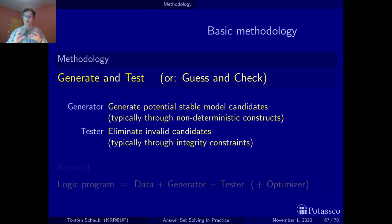This is the core of everything, and in general there is a bit more. The generator and tester encode the problem class, and there's also the data that describes the problem instance and often an optimizer or optimization statement that identifies the optimum solutions.